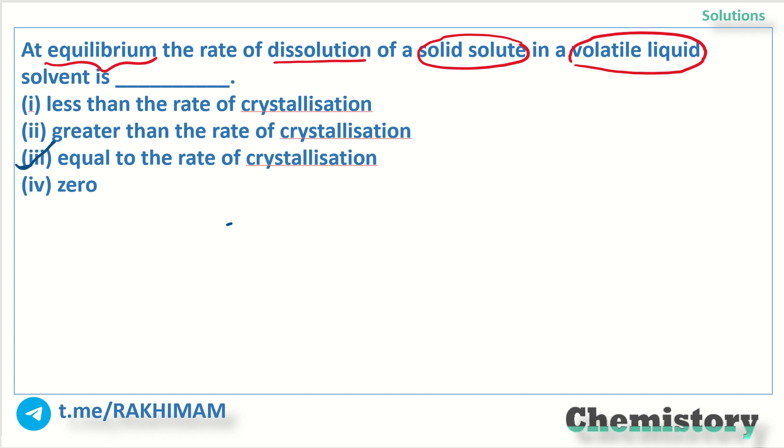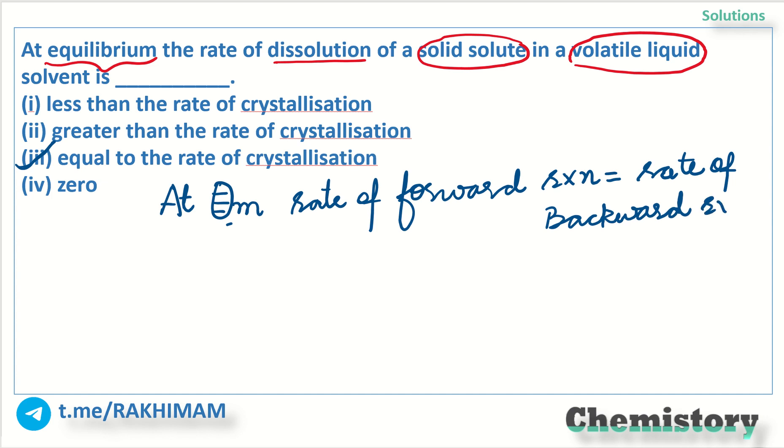Well the answer to the question is option number 3. The reason I would like to tell here is that at equilibrium, you all know that the rate of forward reaction is equal to rate of backward reaction.